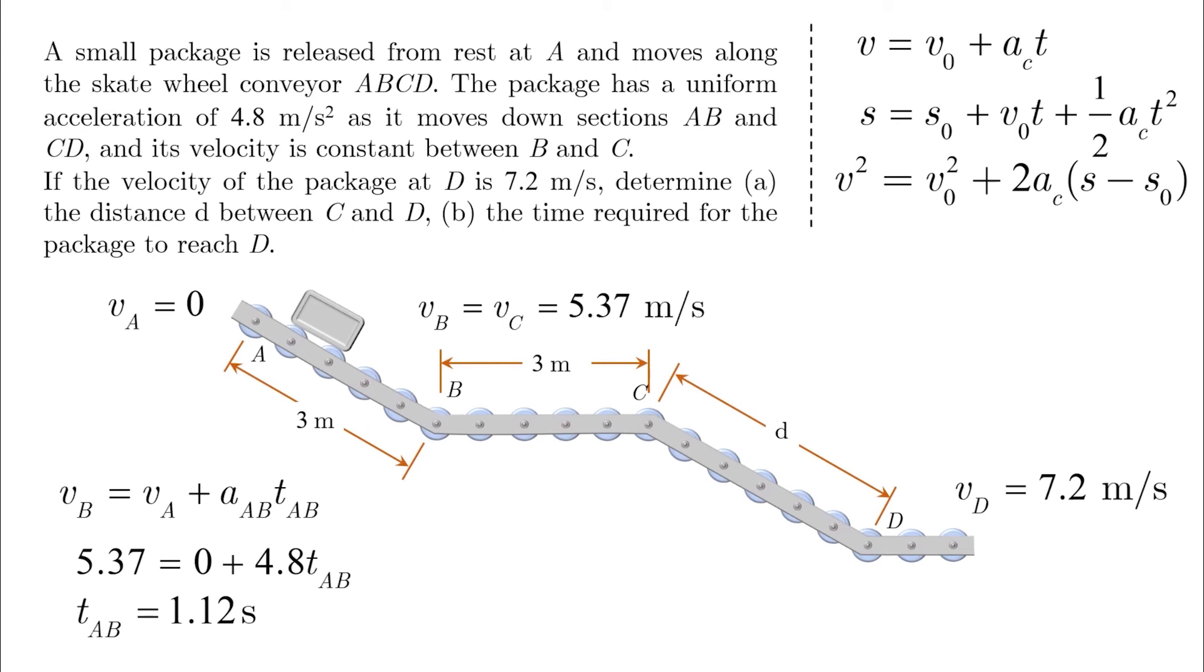For the second section, since A is equal to 0, the first and third equations will give you a trivial result. Basically, V equals V0, so both are not useful to us. The only choice is the second equation.